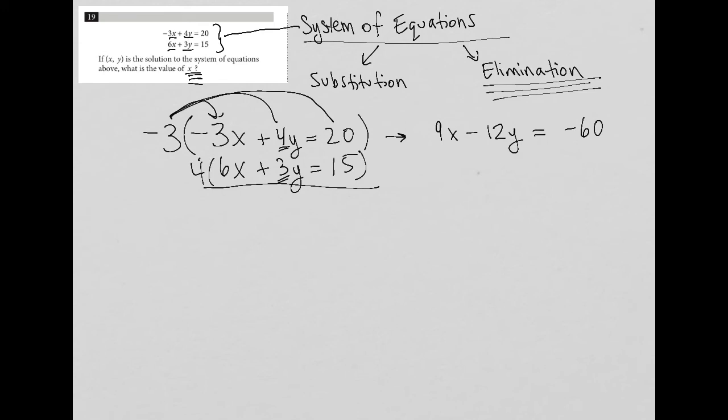And you'll see why in a second. 4 times 6 is 24x. 4 times positive 3y is positive 12y, which is what I want to happen, right? That allows me to cancel out or eliminate my y values. And then lastly, 4 times 15 is positive 60.